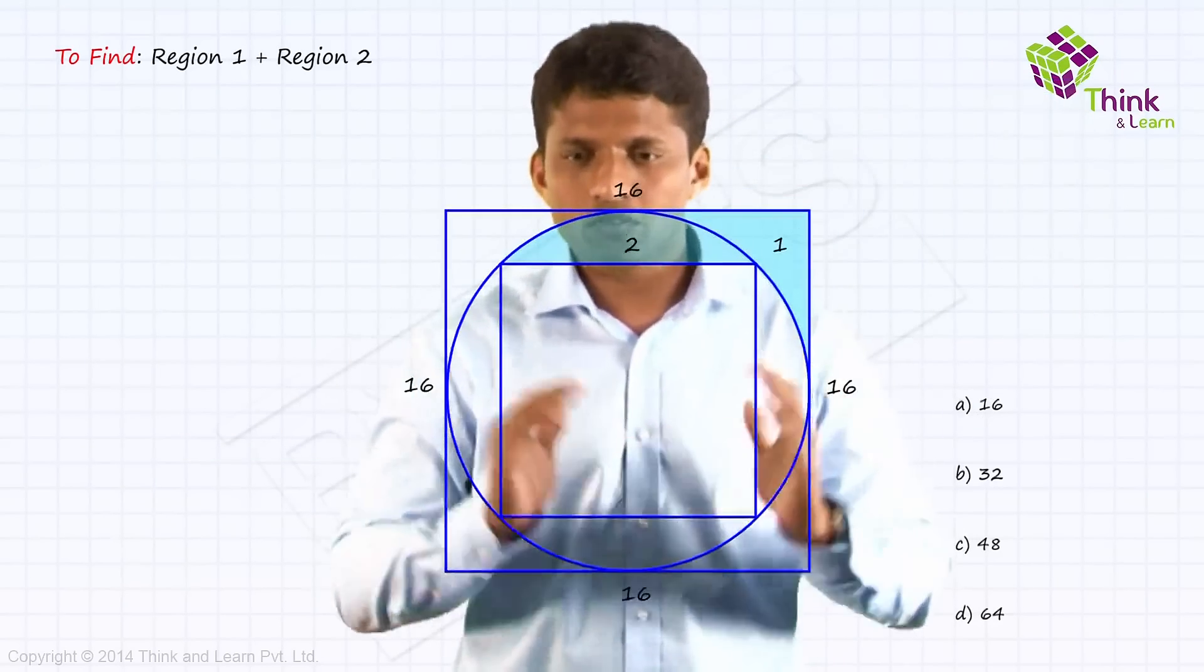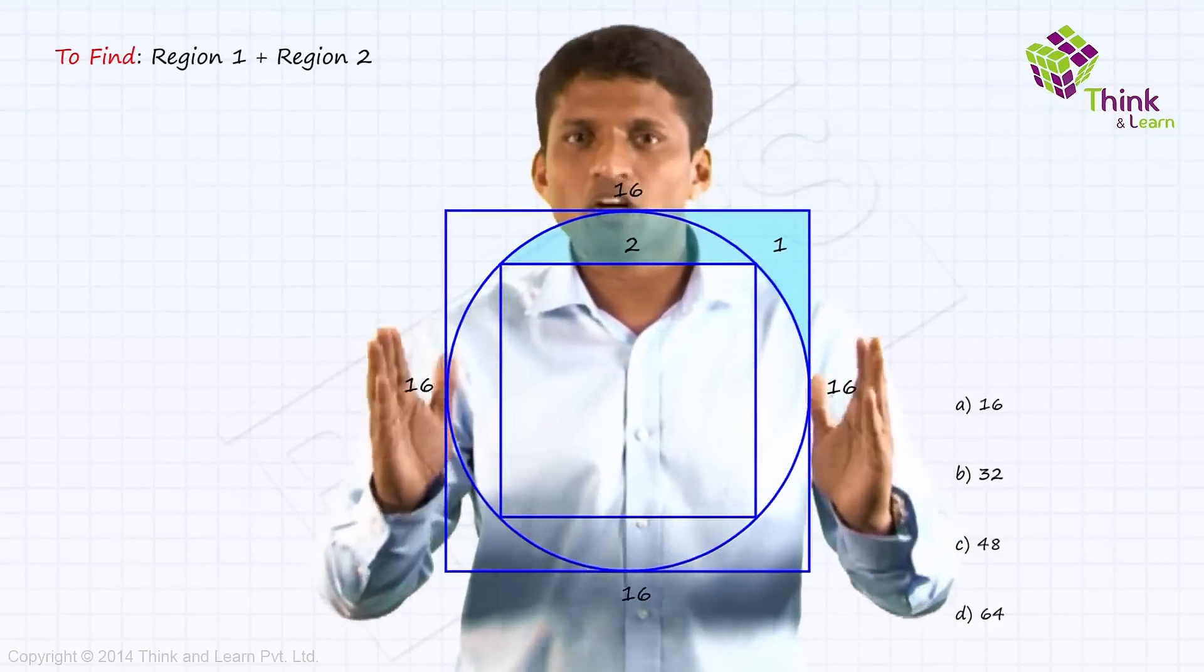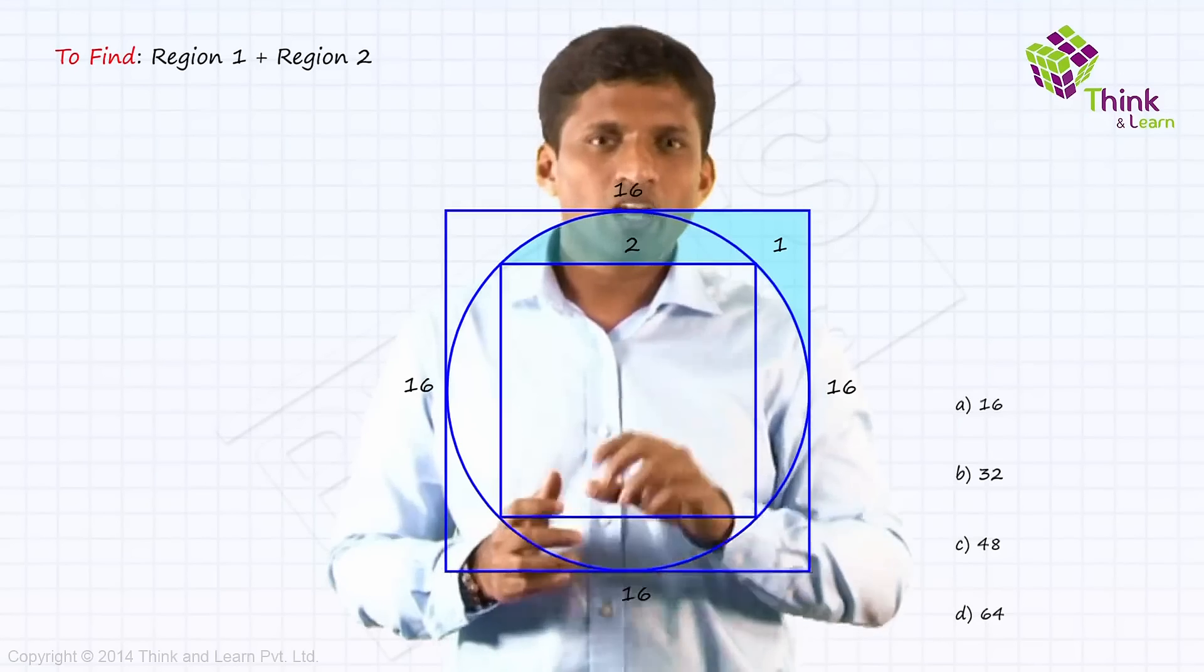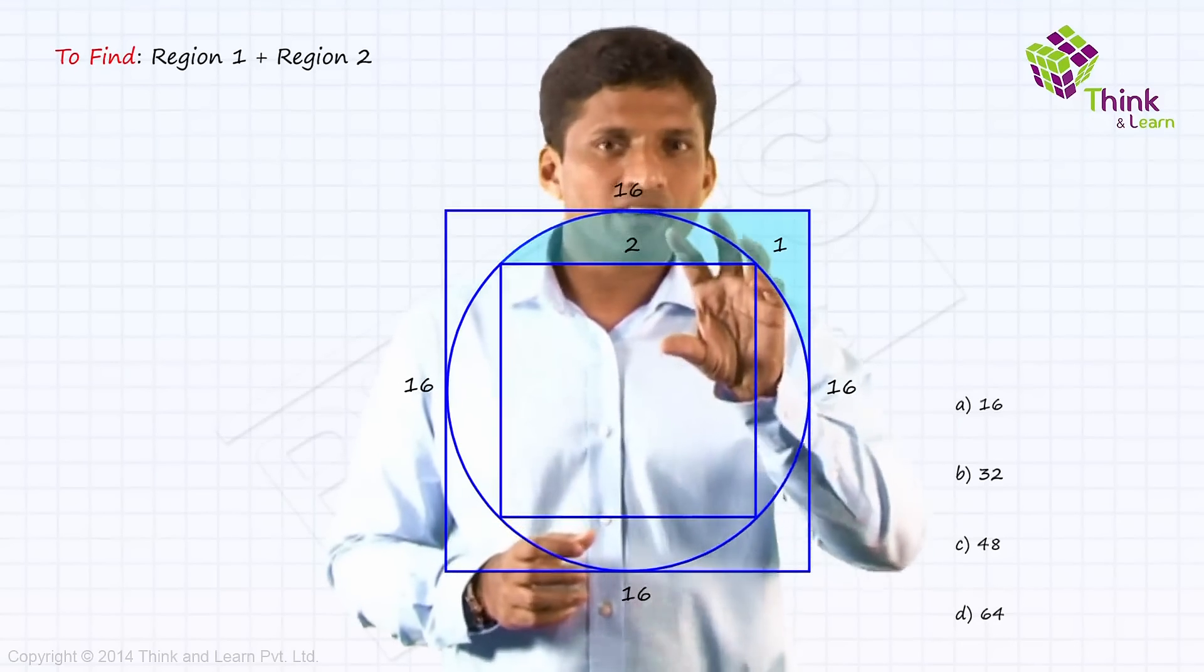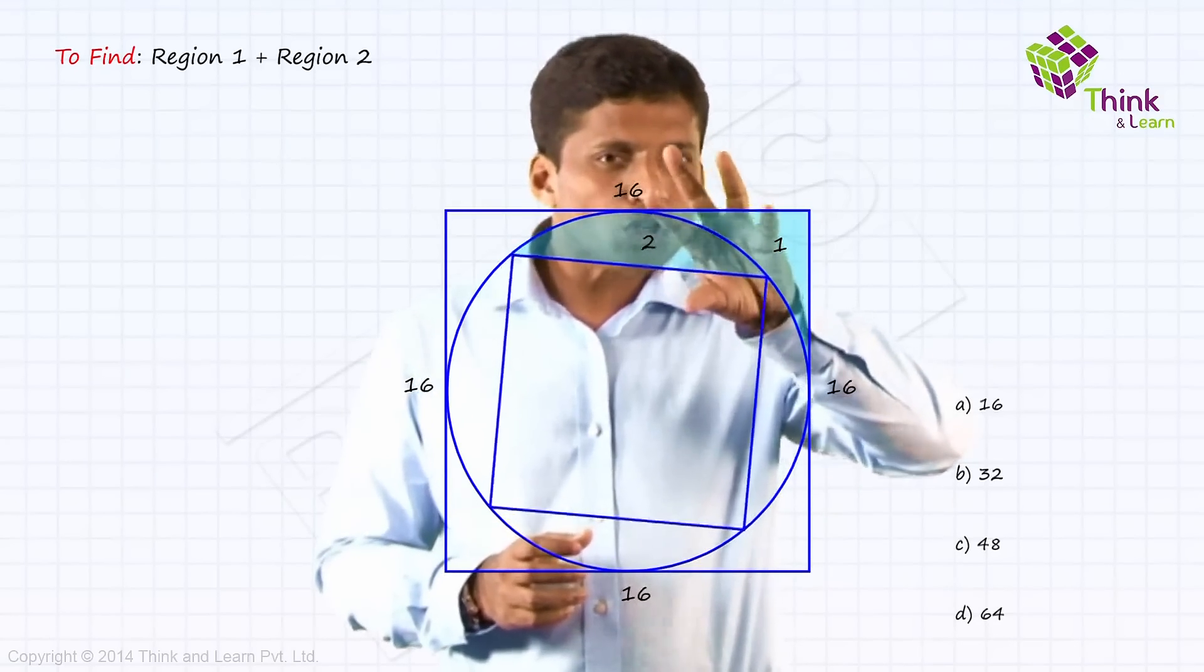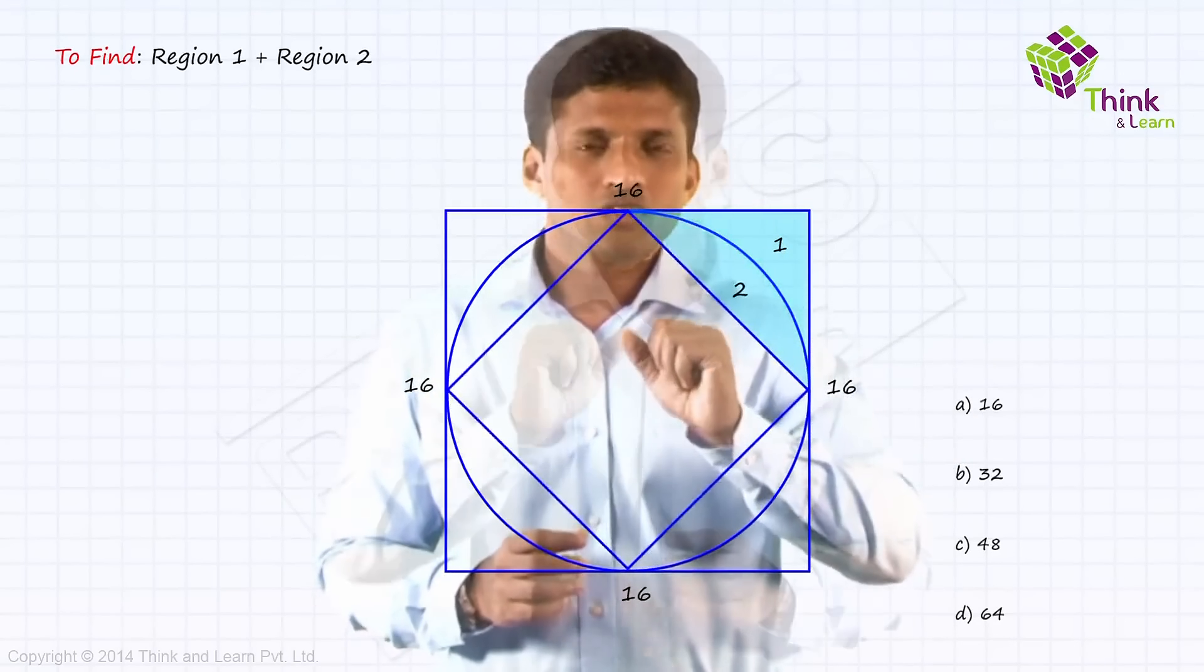So let's look at the original diagram. This is the diagram. The regions are shaded 1 and 2. Now, the inner square, if I just rotate like this, what is happening?